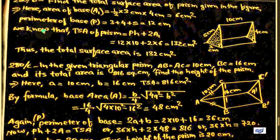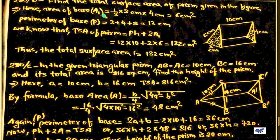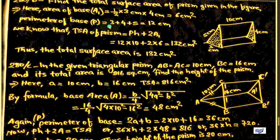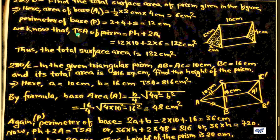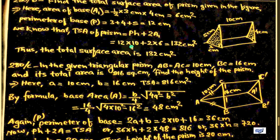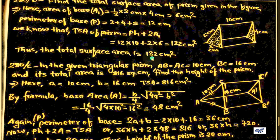Question 280b: find the total surface area of the prism. Area of base A1 = half into 3 into 4 = 6 cm squared. Perimeter of base P = 3 plus 4 plus 5 = 12 cm. TSA = P into H plus 2 times A1 = 12 into 10 plus 2 into 6 = 120 plus 12 = 132 cm squared.